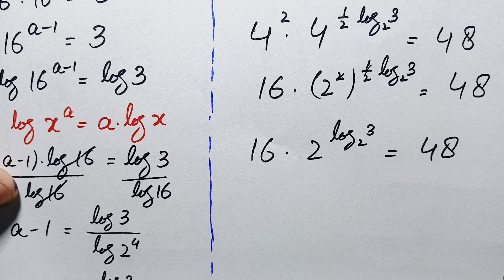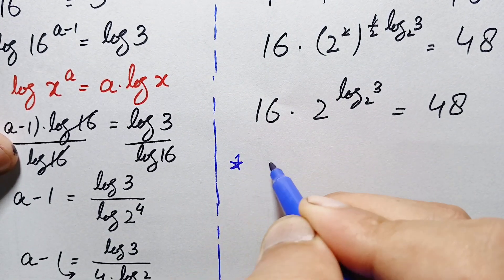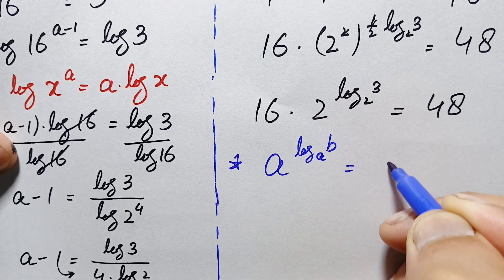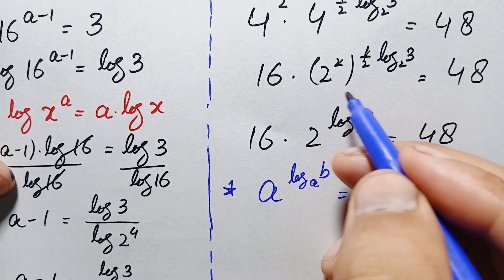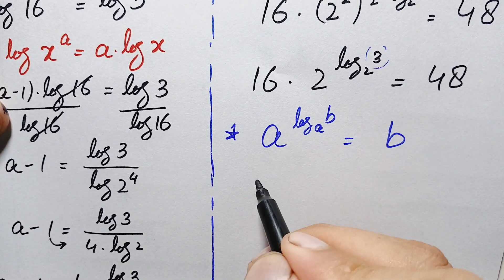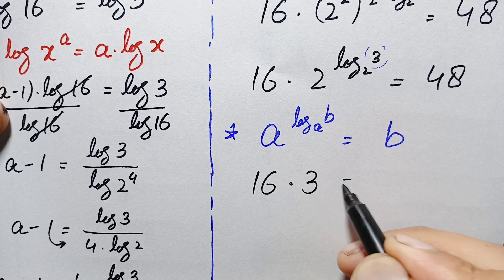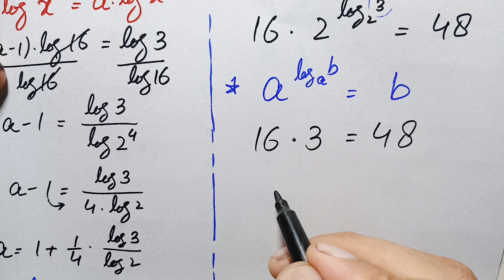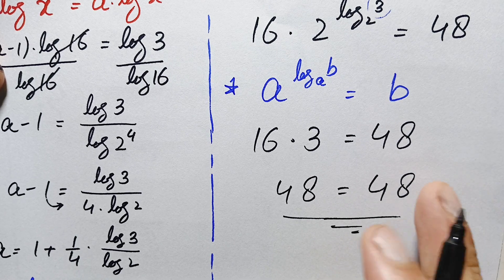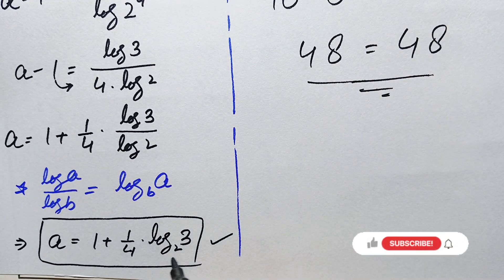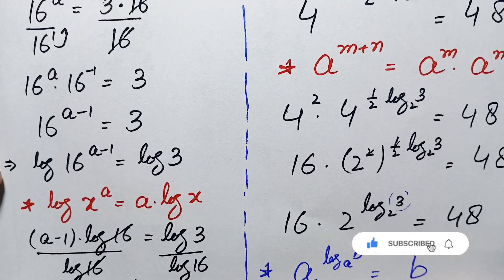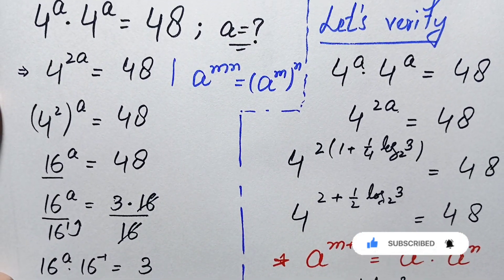In this expression we use the logarithm property: a raised to power log base a of b equals b. Using this property, 2 raised to power log base 2 of 3 equals 3. So the expression becomes 16 times 3 equals 48, and indeed 16 times 3 is 48. Since both sides are equal, a equals 1 plus one-fourth times log base 2 of 3 is confirmed as the exact and correct value of a.